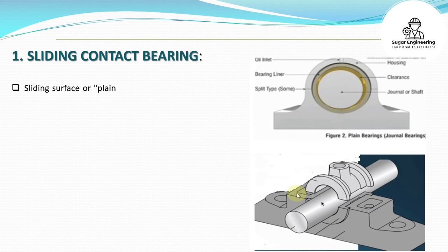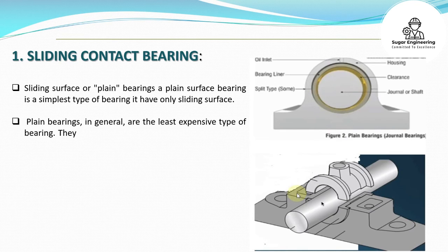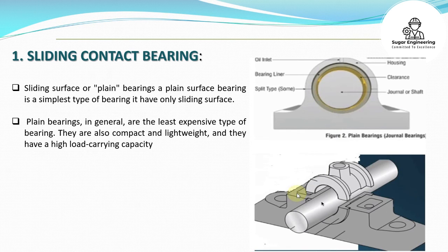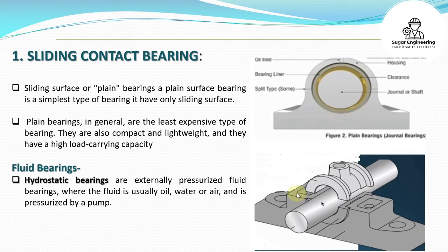A sliding contact bearing, also called a plane surface or plane bearing, is the simplest type of bearing — it has only a sliding surface. Plane bearings are generally the least expensive type of bearing. They are also compact and lightweight, and they have a high load carrying capacity.